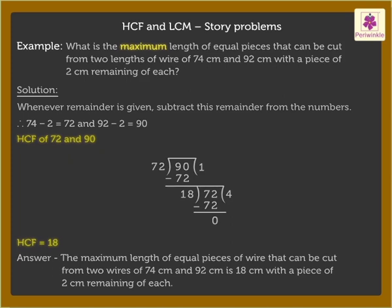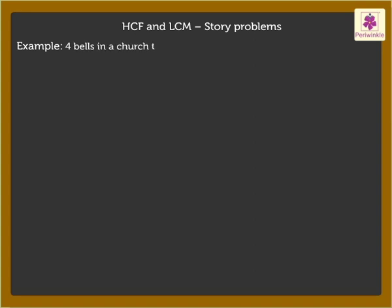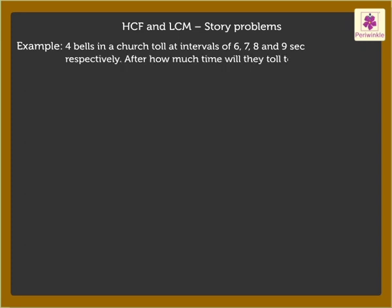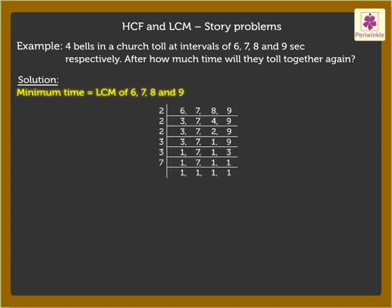Now, let us look at one last example. Four bells in a church toll at intervals of 6, 7, 8 and 9 seconds respectively. After how much time will they toll together again? Here, as we have to find the minimum time after which they will toll together again, we find the LCM of 6, 7, 8 and 9. Thus, the LCM is equal to 2³ × 3² × 7¹, which is equal to 504. So, the bells will toll together again after 504 seconds.